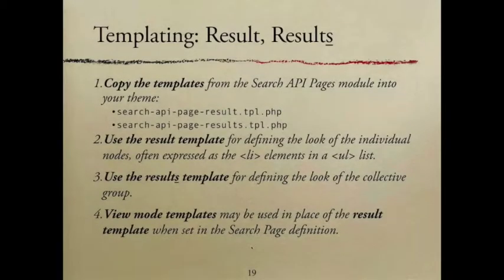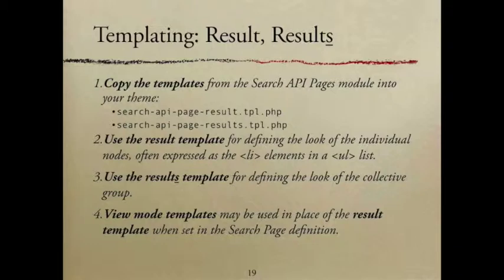Here's the way the templating works. You copy the templates from the module listed up here in step one. Then you use the result template for the group. Normally everything comes in unordered lists or an ordered list, and that's what you're really defining — the way the group appears or the unordered list.